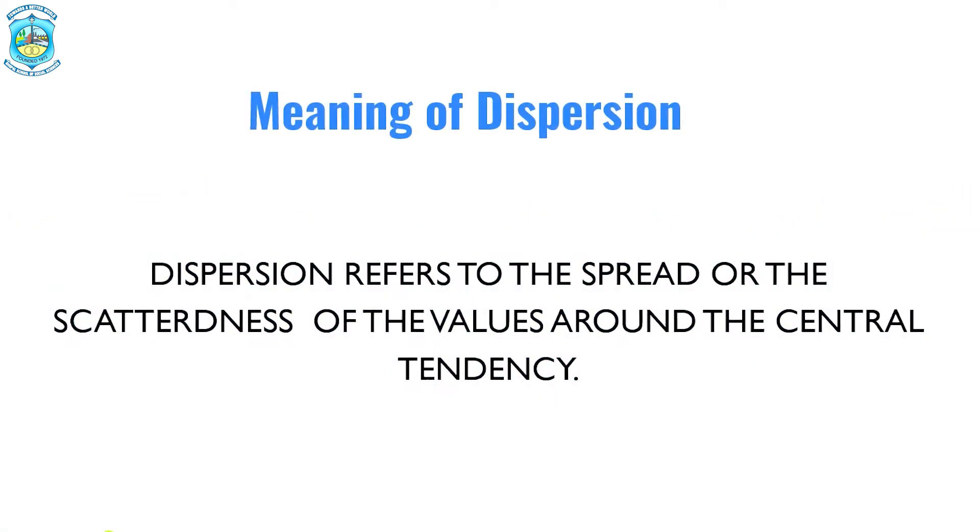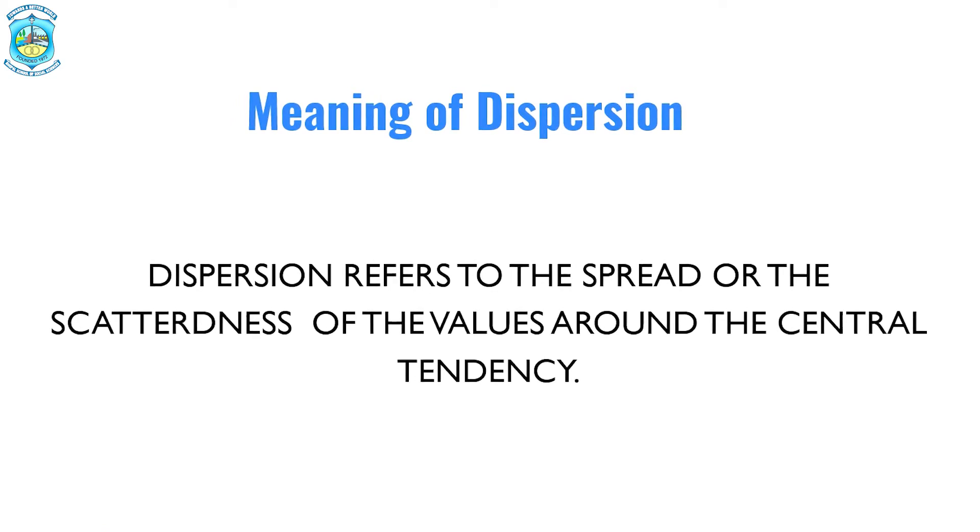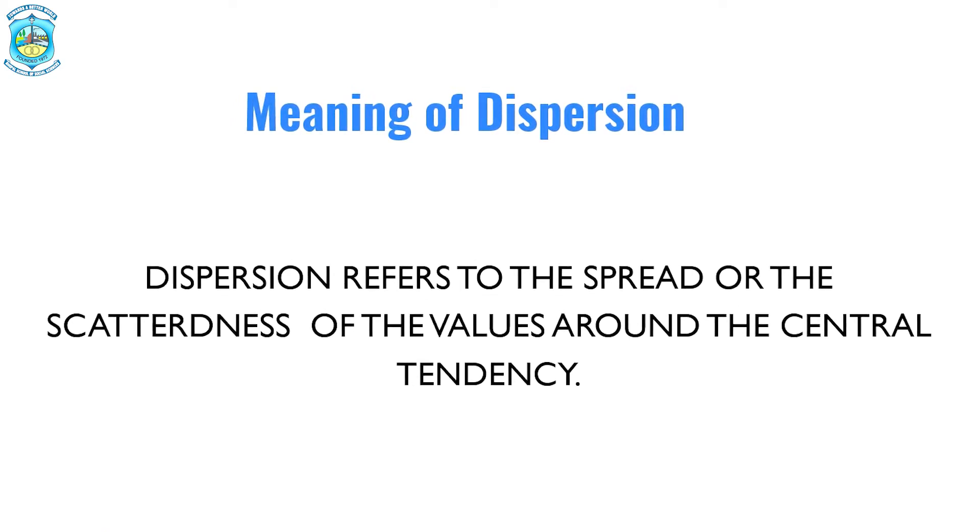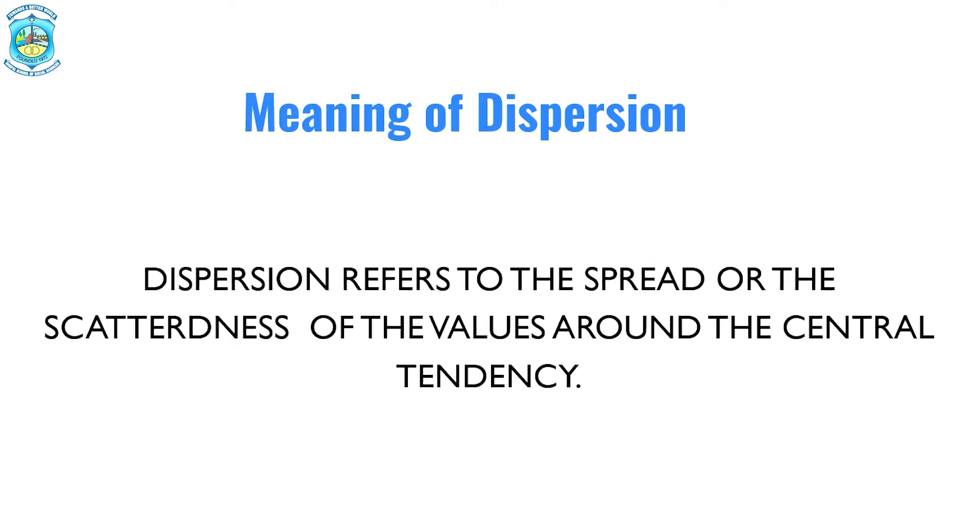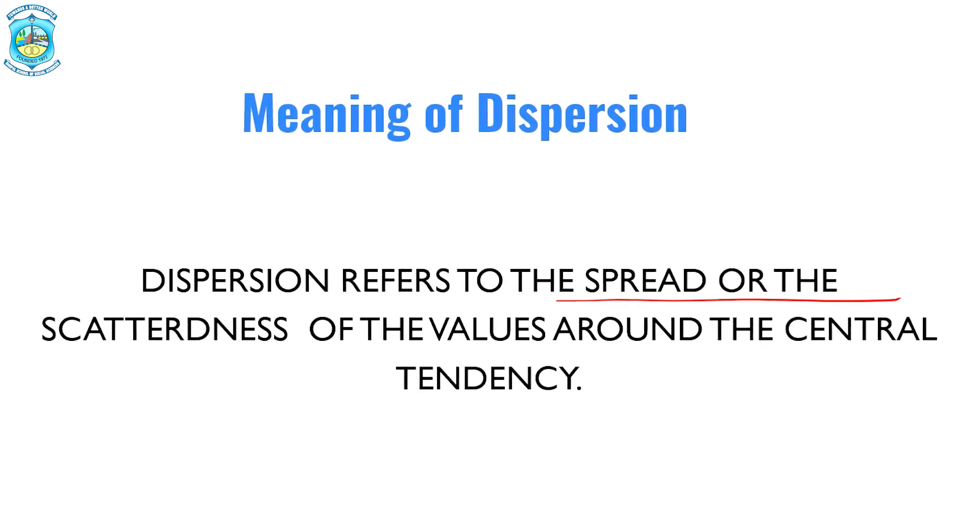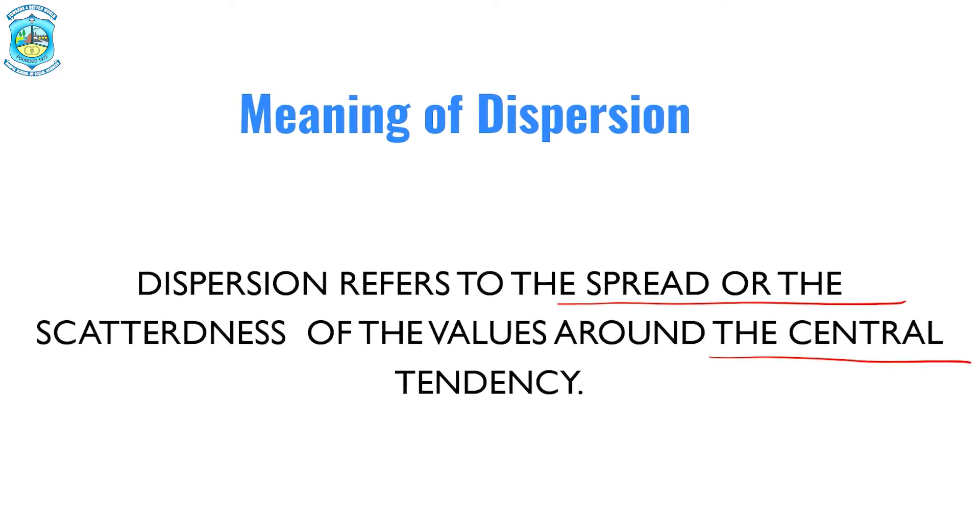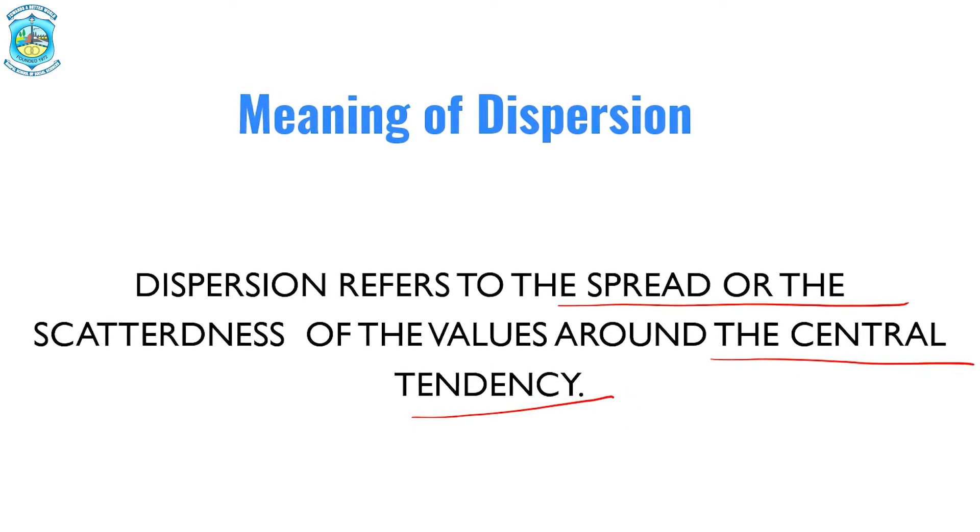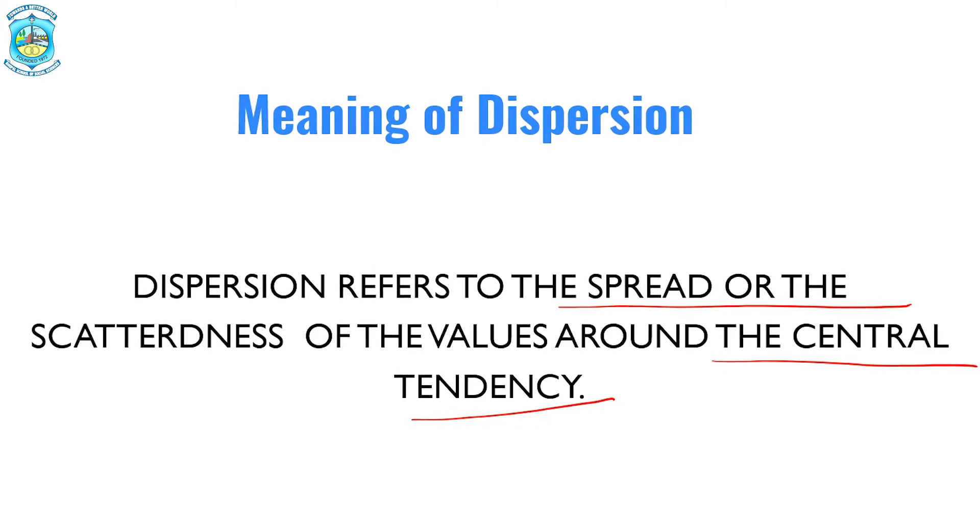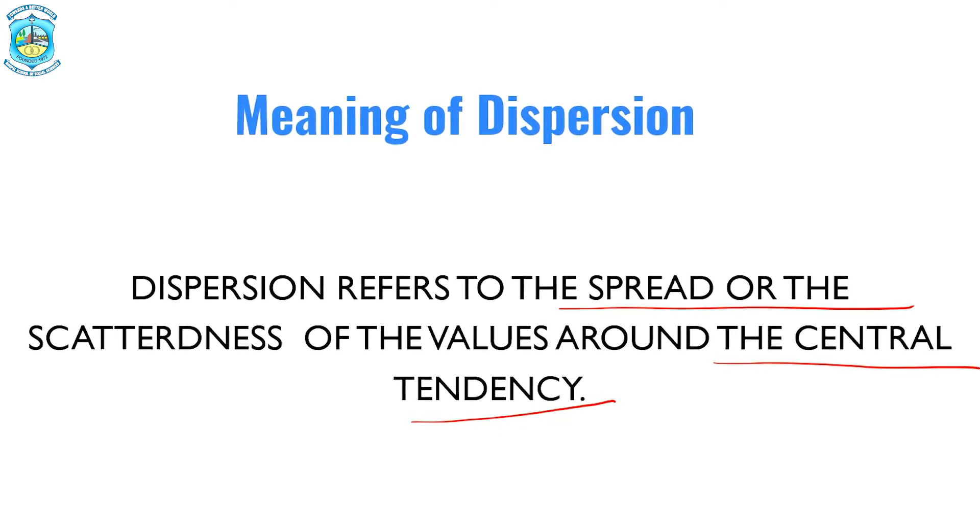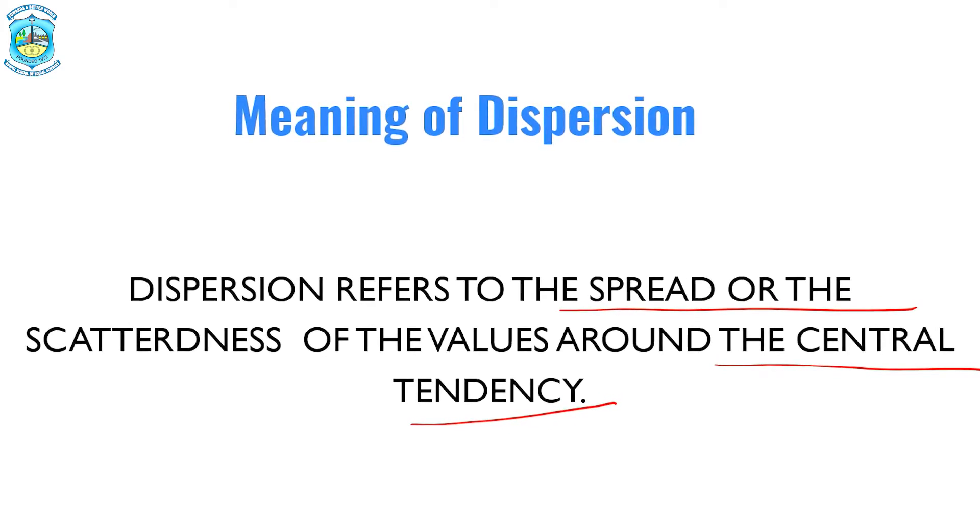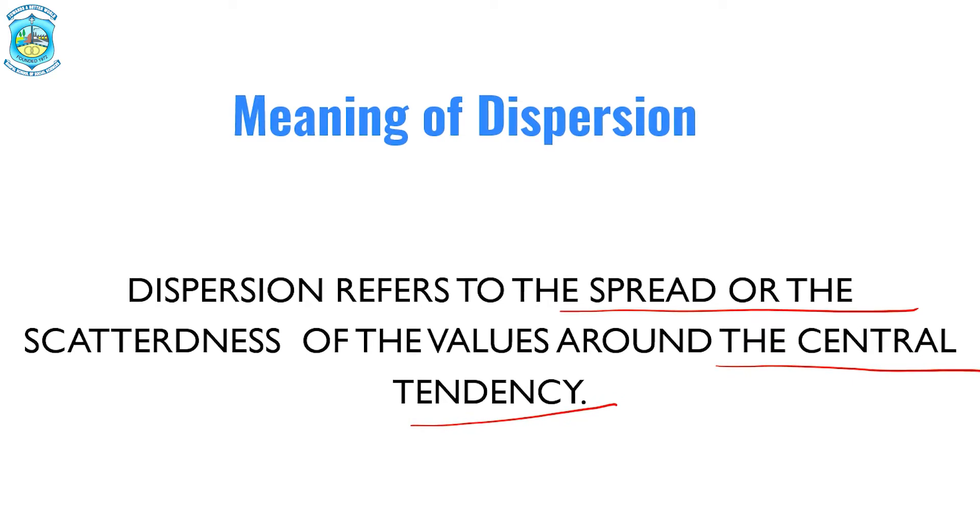So you might have understood by now what is the meaning of dispersion. Dispersion actually talks about the spread or the scatteredness of the values around the central tendency. How it is spread across the central tendency, this would make a big impact in understanding the concept of dispersion.